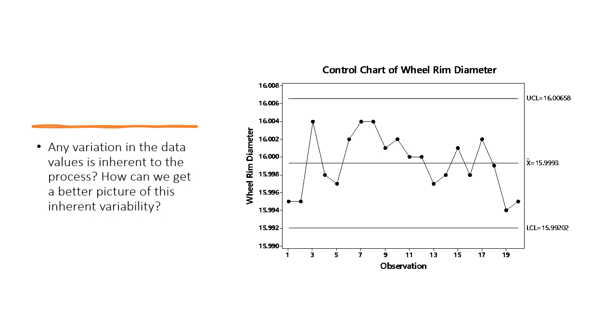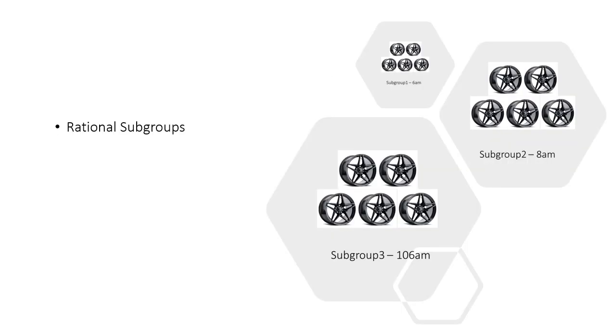How can we get a better picture of this inherent variability? It is important to estimate the true common cause variation in the process so we can put limits on how much variation we should see in the control chart. These limits are the upper and lower control limits on the control chart.